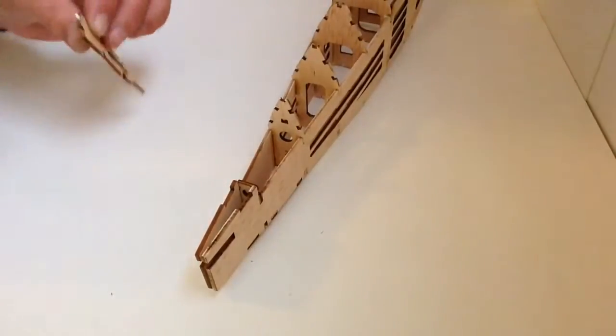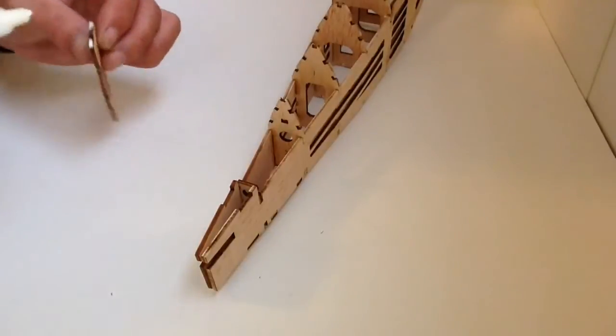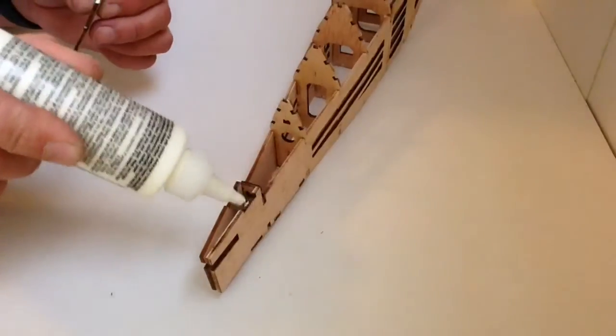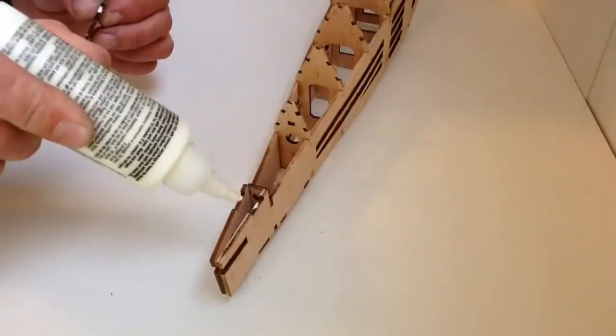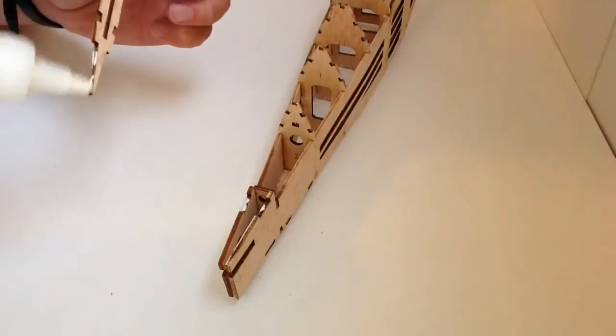So what we'll do is put a little bit of glue on this end here, and then we'll add a little bit of glue to these sections here and on the inside here.